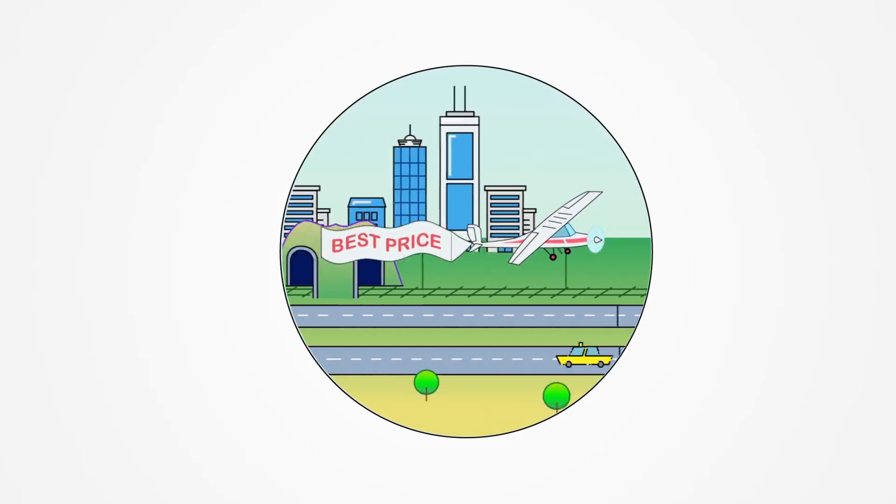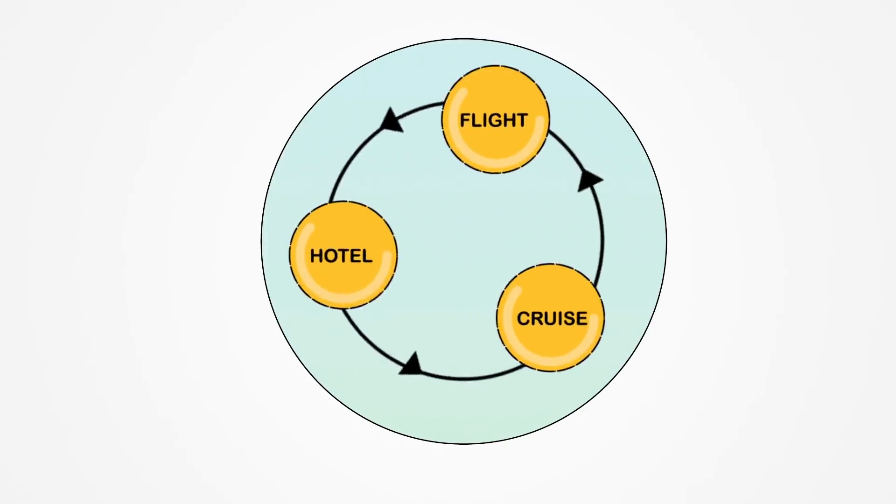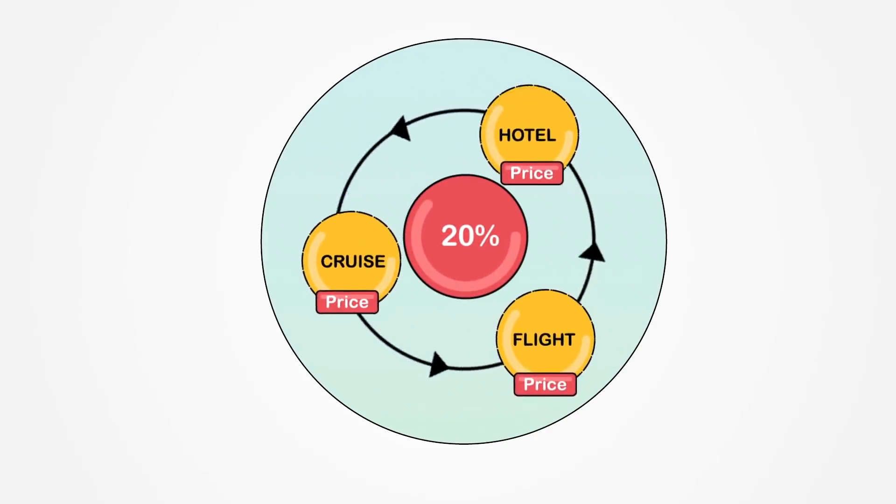But your favorite travel website has a hidden secret. Everything they're selling comes from just a few middlemen companies, and they are taking a huge chunk of the profit, up to 20%.